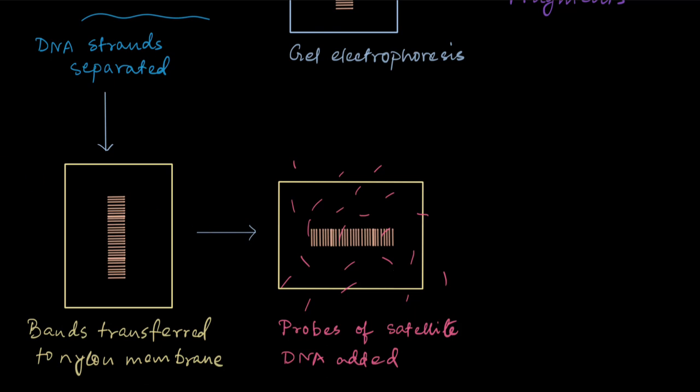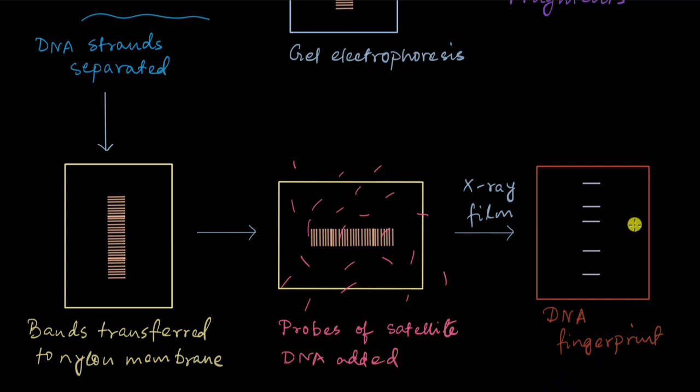And since they are radioactive, what we'll do is we'll hold them against an x-ray film. So, only those bands which have become radioactive now, because they have the radioactive probes attached to them, they will be shown in the x-ray film. They will produce an image in the x-ray film. And this is our DNA fingerprint. Because these are the images of the bands that we were looking for, which correspond to the satellite DNA that we were interested in. So, this is our DNA fingerprint. So we have obtained our DNA fingerprint.